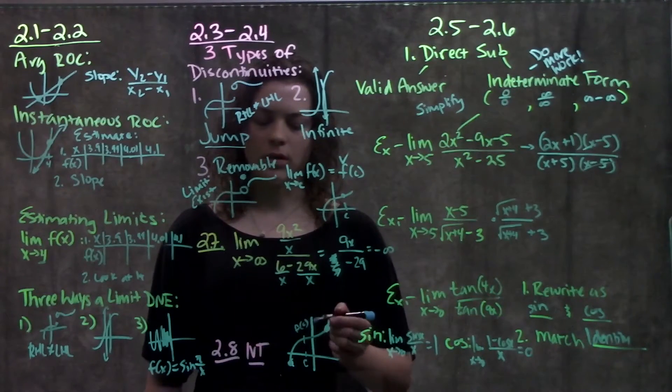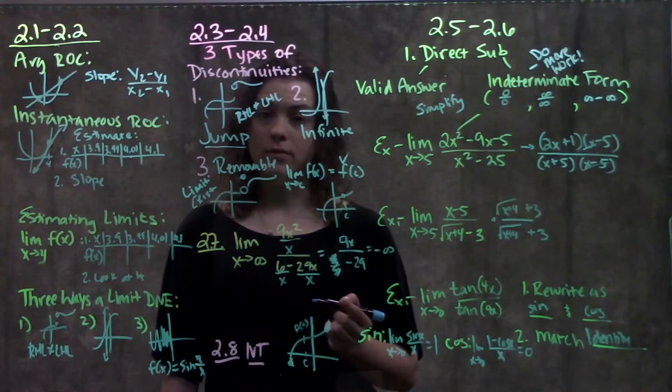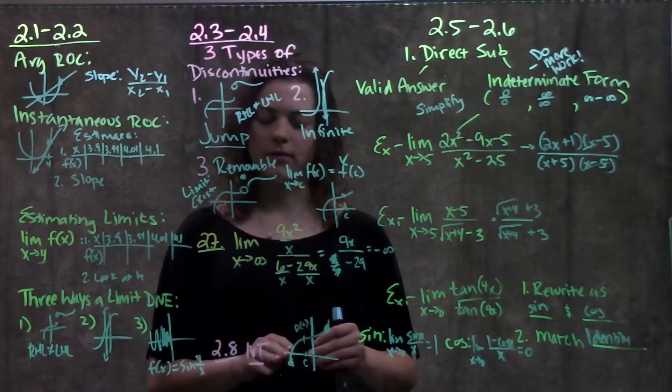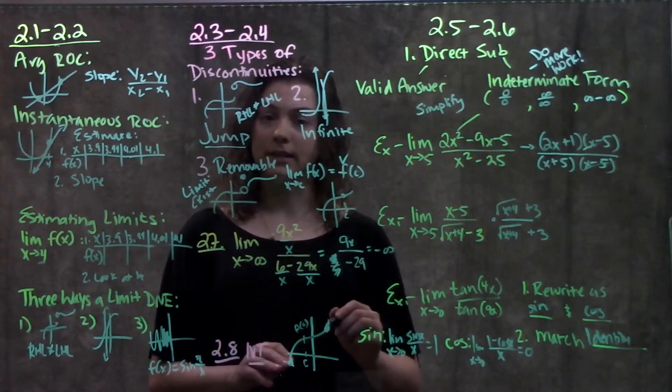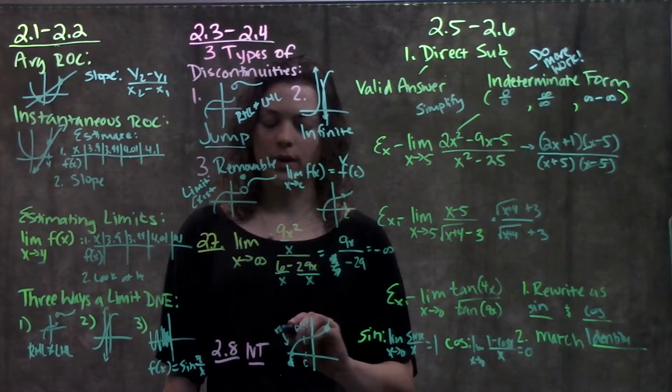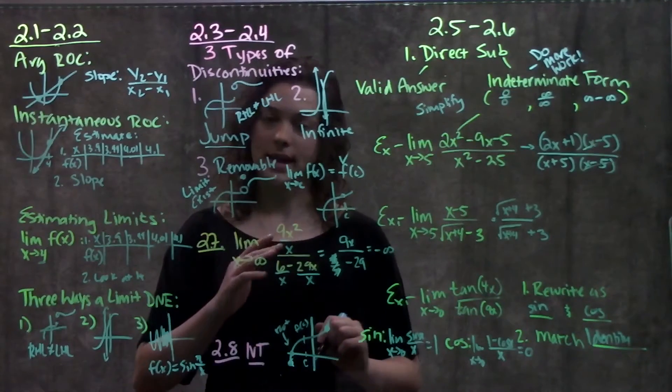The types of problems we used this for was, one, if we're looking for a root of a function, we could say, well, I know my function is continuous. If it's going from some negative value to some positive value, then I know that somewhere in the middle it has to have a root of the function, or it has to cross the x-axis.